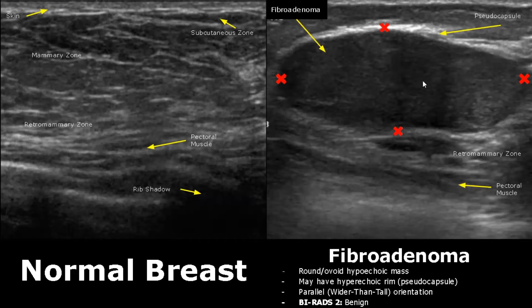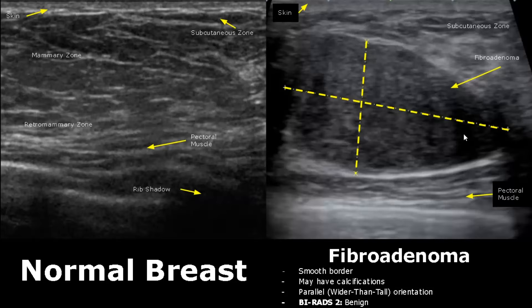Here we have another image of fibroadenoma. It has a smooth border and may have calcifications. You can see the pseudo-capsule here, and it has a parallel orientation — it is wider than tall.